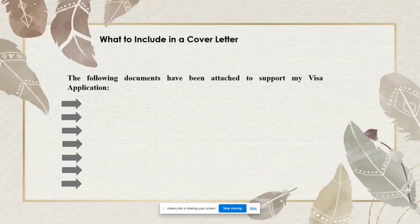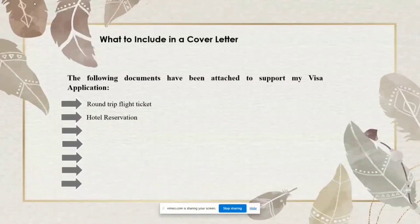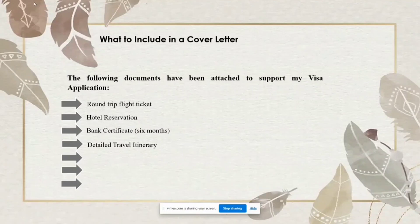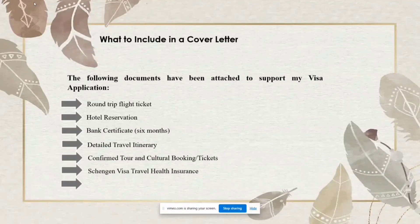For your supporting documents, you can make a list like this: 'The following documents have been attached to support my visa application.' List items such as: round trip flight ticket, hotel reservation, bank certificate, six months bank statement, detailed travel itinerary, confirmed tour and cultural bookings or tickets, travel health insurance, and proof of residence. If you have more documents, add them here, because more documents increase your chances of getting a visa.